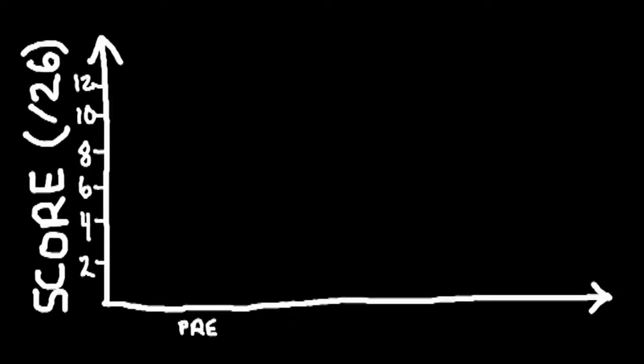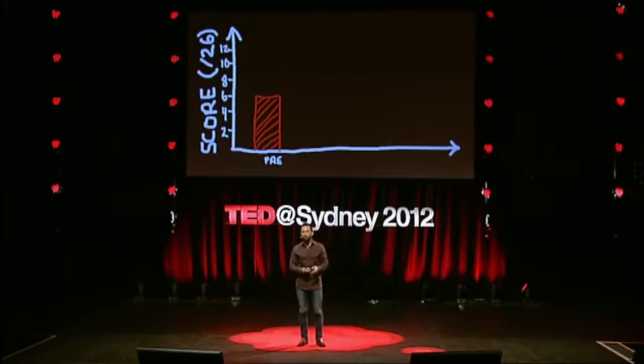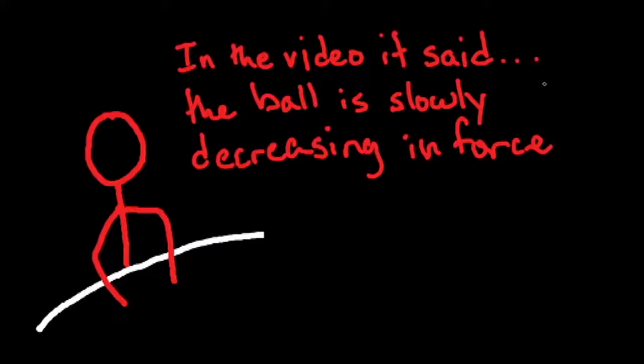But how much did they learn? On the pre-test they scored 6 out of 26, and there were basically direct answers to at least 14 of those questions. But how much did they pick up? The average on the post-test was 6.3. What happened? They thought they learned, but their scores didn't change. One of the students told me the video said the ball is slowly decreasing in force — they thought there was some upward force on the ball, and they thought that was presented to them. They couldn't even correctly remember what was presented five minutes earlier.